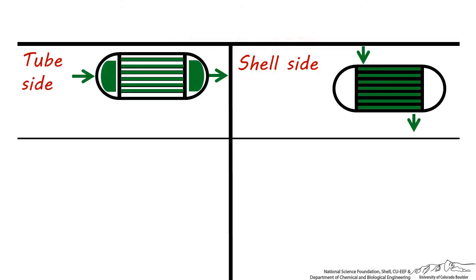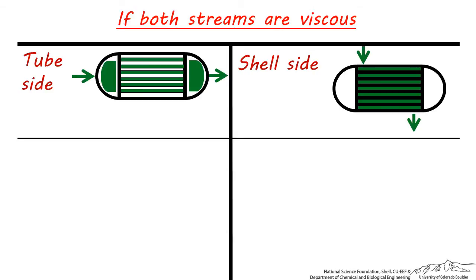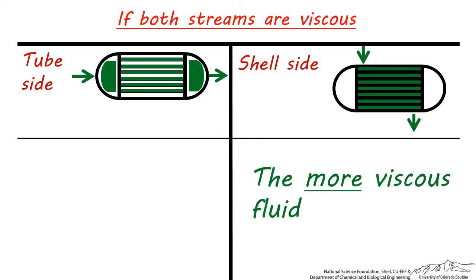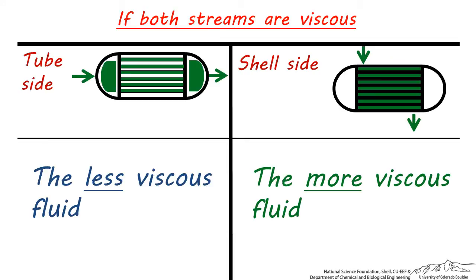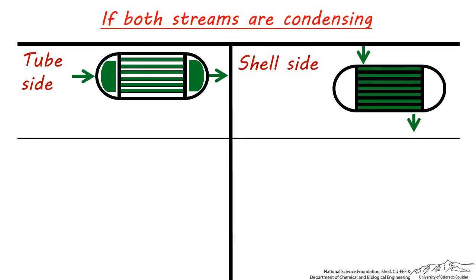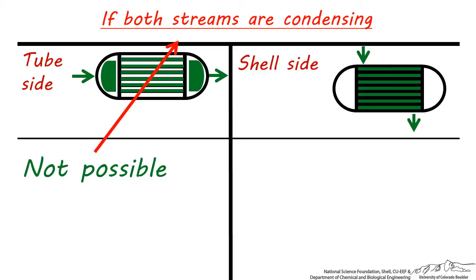Though this will be rare, in the case of both streams being viscous, choose the more viscous stream as the shell-side fluid and the other as tube-side. Regarding condensing streams, you won't encounter both the hot and cold stream condensing in the same heat exchanger — it's simply not possible, so this should not be a concern.